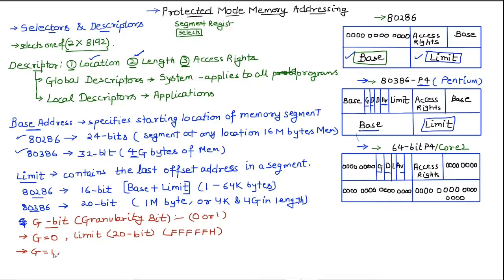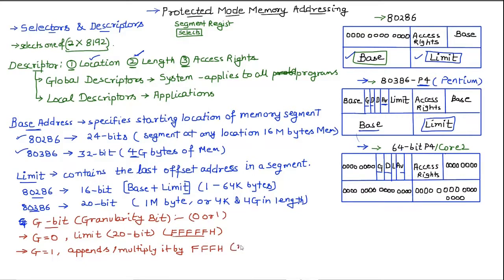If G is equal to 1, we will append this limit with FFFH — sometimes described as multiplying it by 4K bytes. So appending FFF to the 20-bit limit gives us a total of 8 hexadecimal digits, meaning we are multiplying by 4 kilobytes and increasing the segment limit significantly. This is what happens when G equals 1: the limit is appended to increase the addressable range.